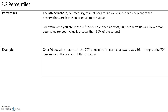In section 2.3, we will talk about percentiles. The kth percentile, denoted by the notation P sub k, of a set of data values, is a value such that k percent of observations are less than or equal to the value. For example, if you are in the 80th percentile, then at most 80% of values are lower than your value, or your value is greater than 80% of the values.